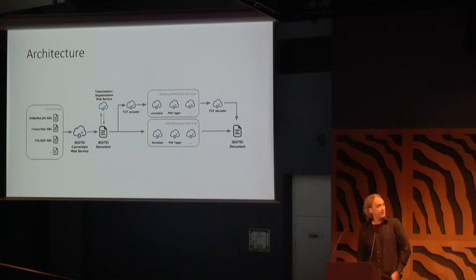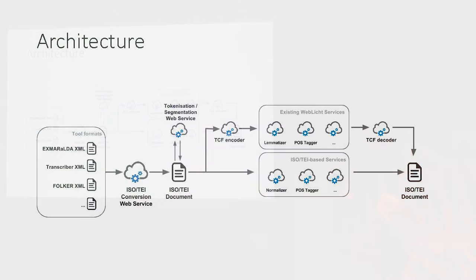The general architecture would then look something like this. You start with one of the tool formats, you have one web service for converting that to ISO TI, and then you either go along the upper route via a TCF encoder-decoder pair and use the existing WebLicht services, or you go directly into web services that operate on that ISO TI format. In either case, what you'll get in the end is an ISO TI document, plus the annotations that the web service has provided.